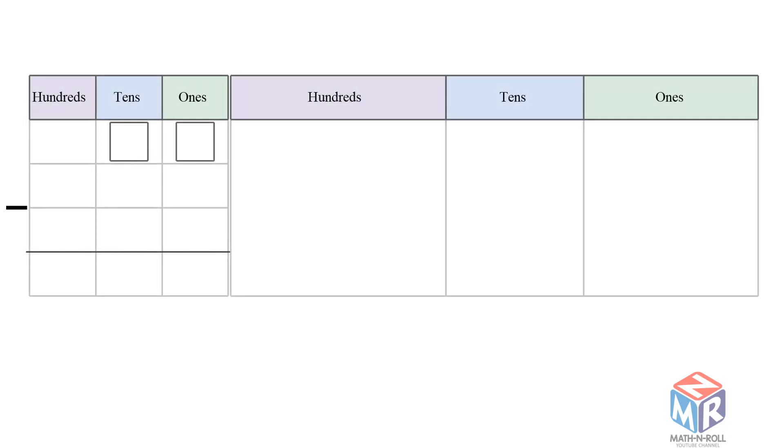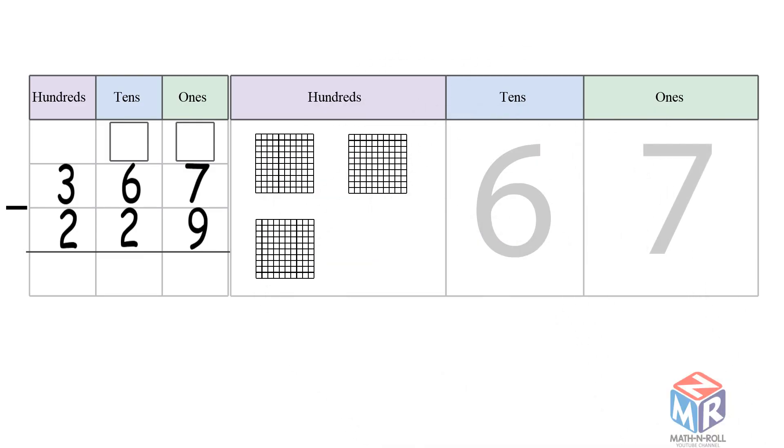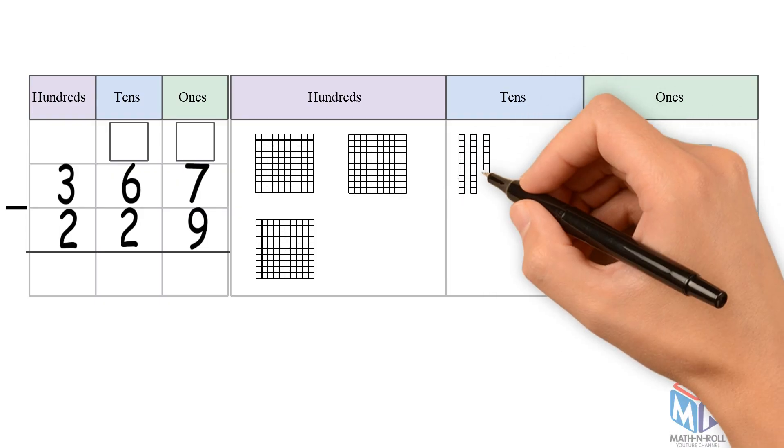Let's try another example: 367 minus 229. Let's draw it out. 367 has 3 hundreds, 6 tens, and 7 ones.